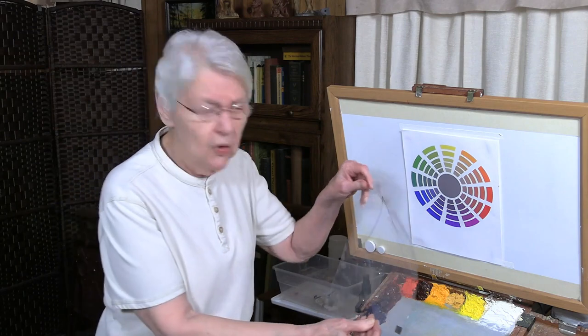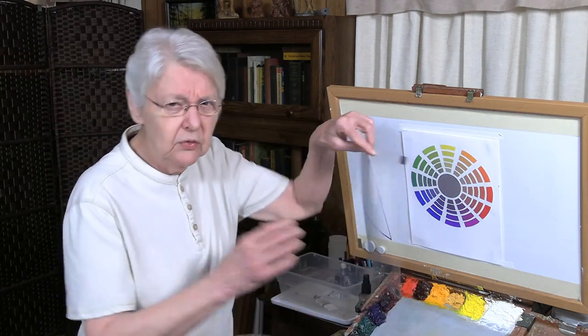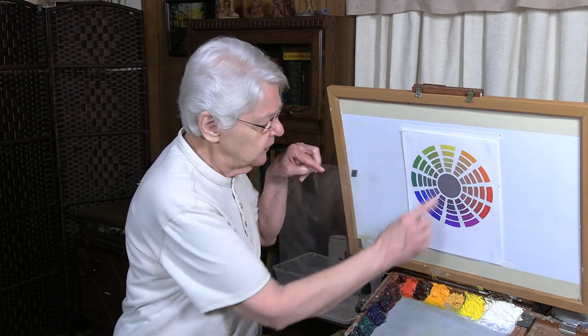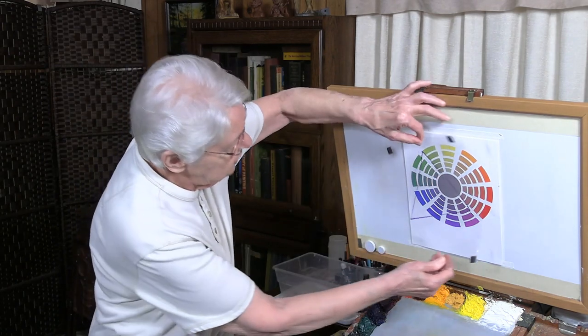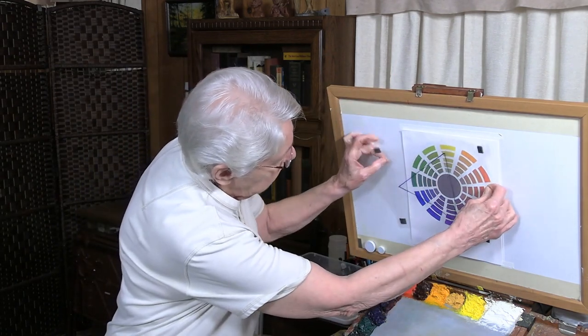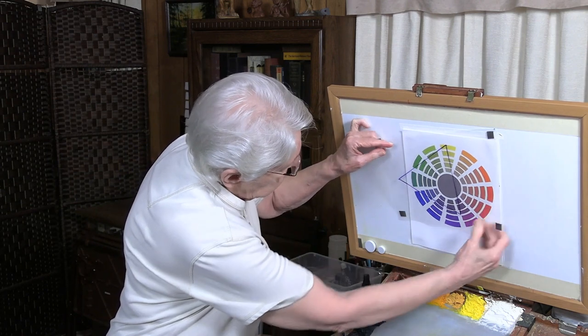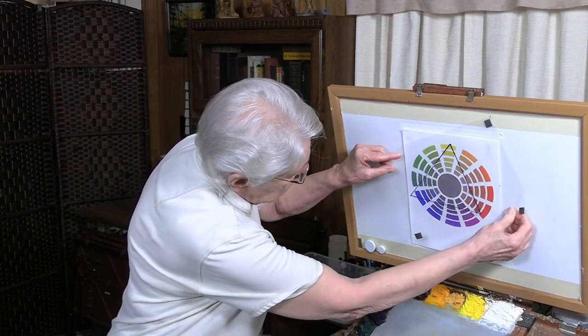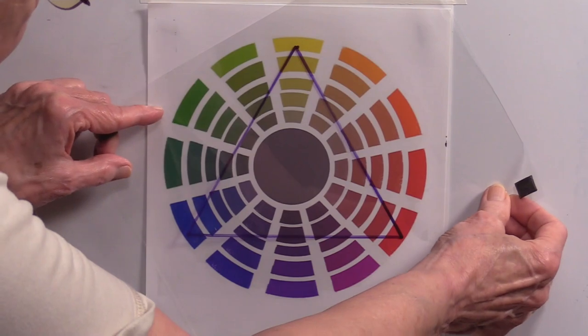So that's a triad and they're arranged in a triangle. Usually they are equal distance on the color wheel. Let me just show you this range of triad right here. Let's pull this yellow, red, and blue. There's the primary triad.